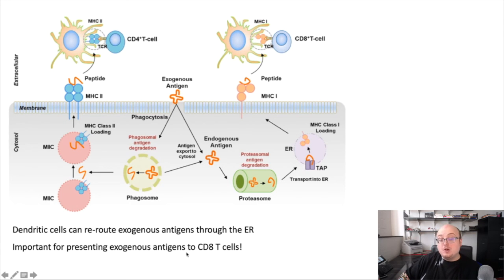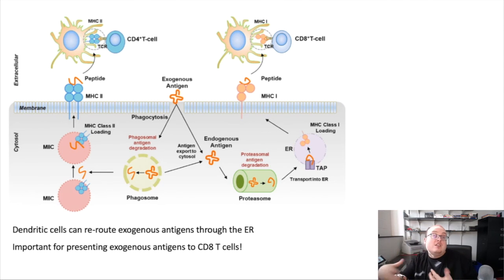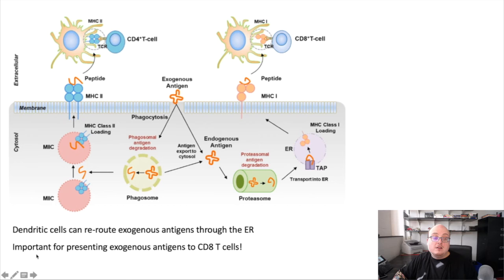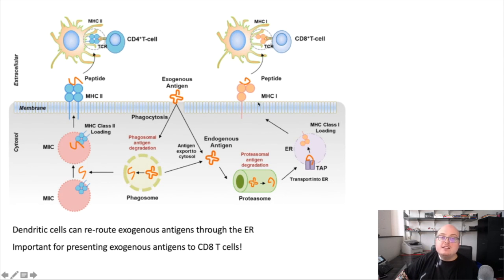This is a very important part of our overall adaptive immune response, because it allows us to take advantage of our CD8 T cell compartment even for antigens that are not derived from intracellular pathogens. This allows us to use CD8 T cells to fight large extracellular parasites and extracellular bacteria. Without this process, we would only be able to use CD4 T cells for those types of antigens. This greatly expands our ability to fight a much broader set of infections by activating our CD8 T cell compartment through exogenous antigens. This process happens exclusively in dendritic cells, which is why they're such an important professional antigen-presenting cell population.